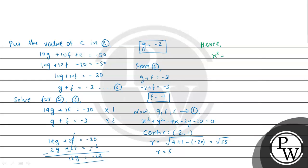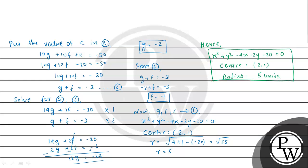The equation of the circle is x² + y² - 4x - 2y - 20 = 0. The center is (2, 1) and the radius is 5 units. This is our final answer. I hope you understood the solution. Best of luck. Thank you.